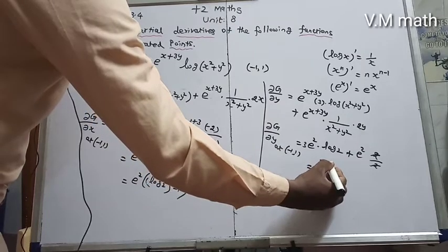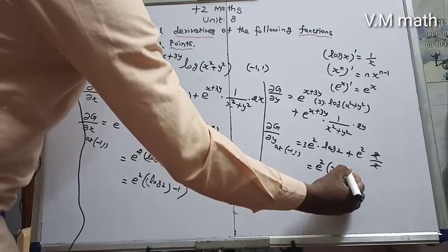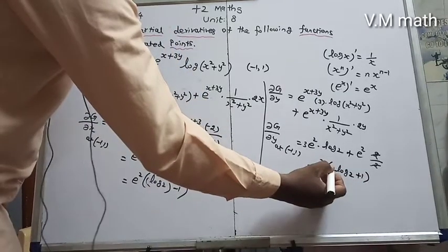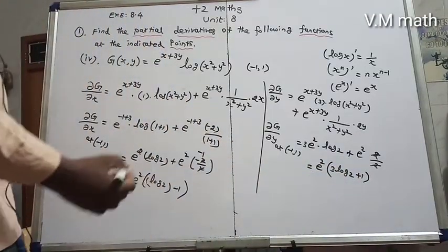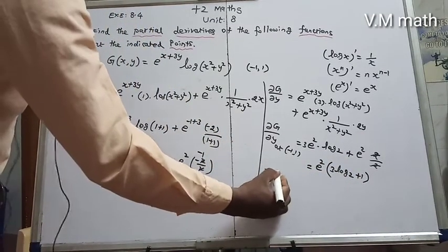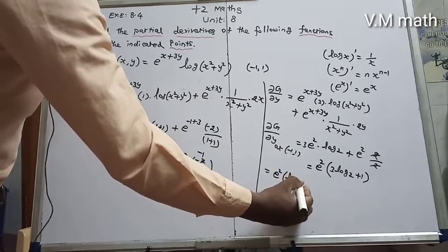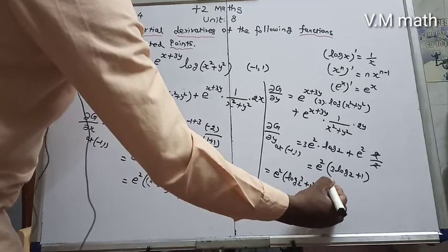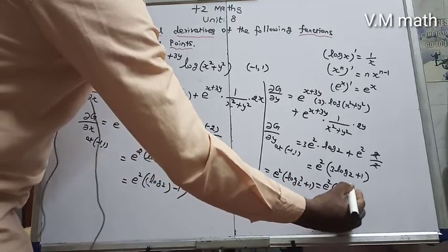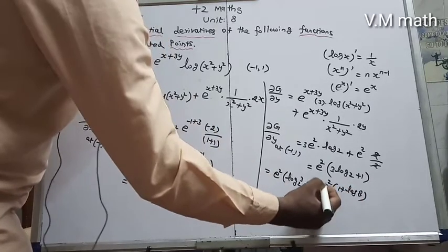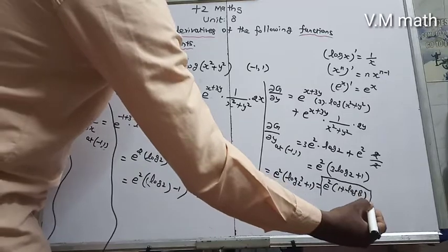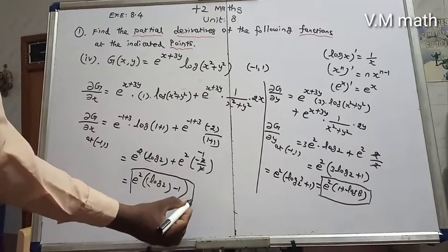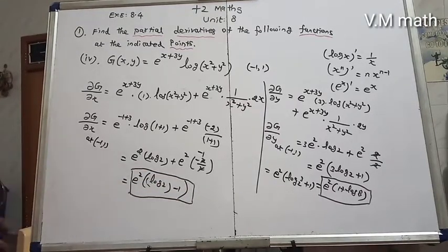This gives e² times 3 log 2 plus 1. Now using the power rule for logarithms, 3 log 2 equals log 2³ = log 8. So the final answer for dg/dy at (-1, 1) is e²(1 + log 8). And the first answer (dg/dx) was e² times (log 2 minus 1).